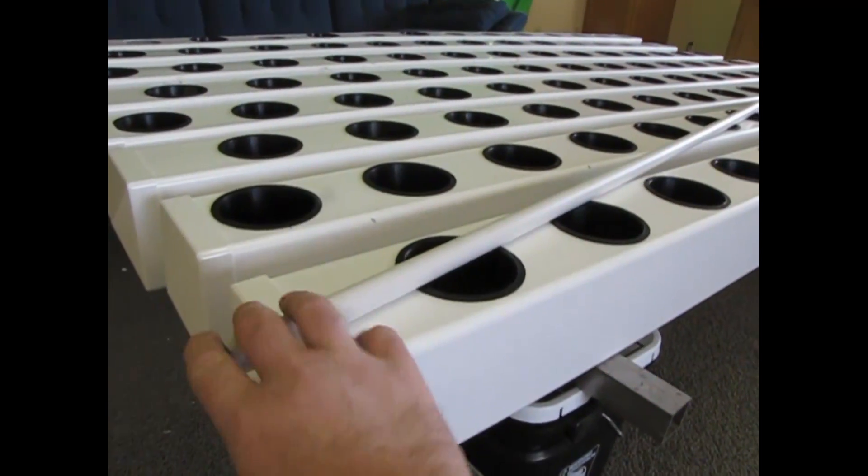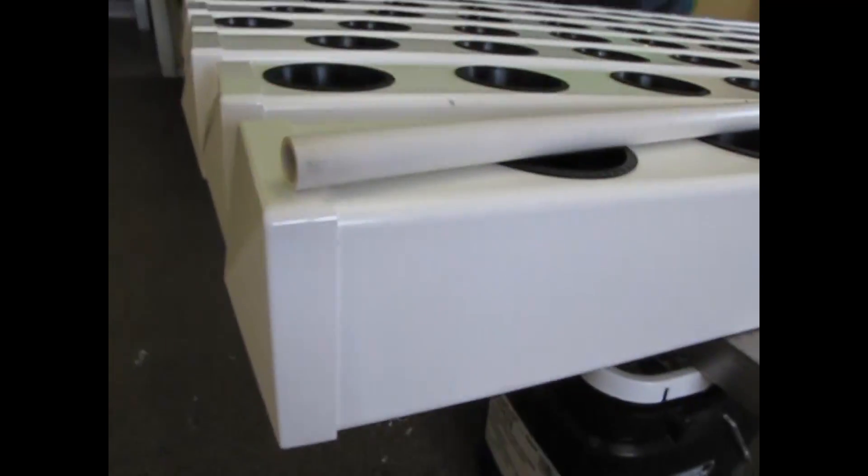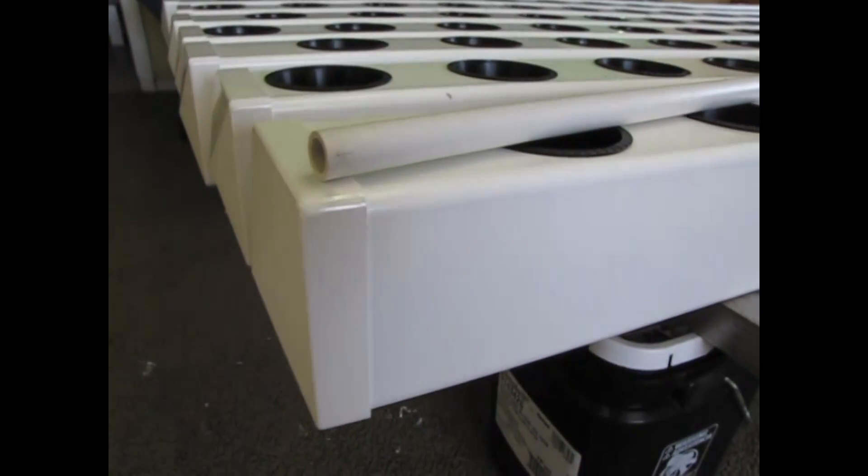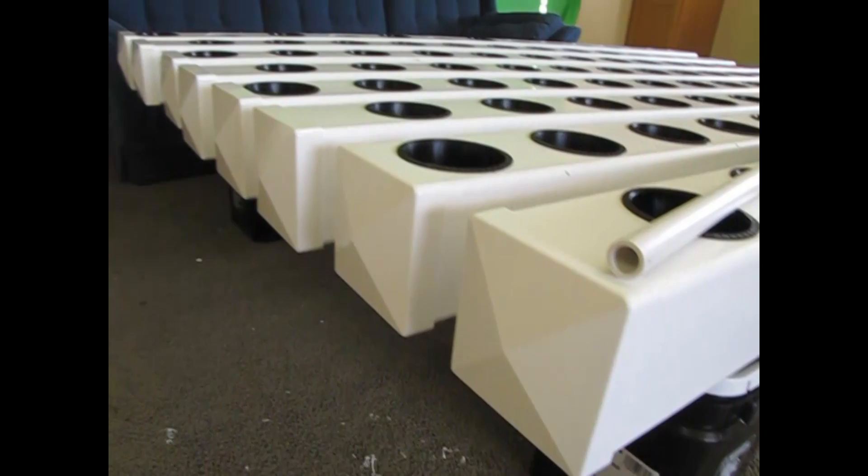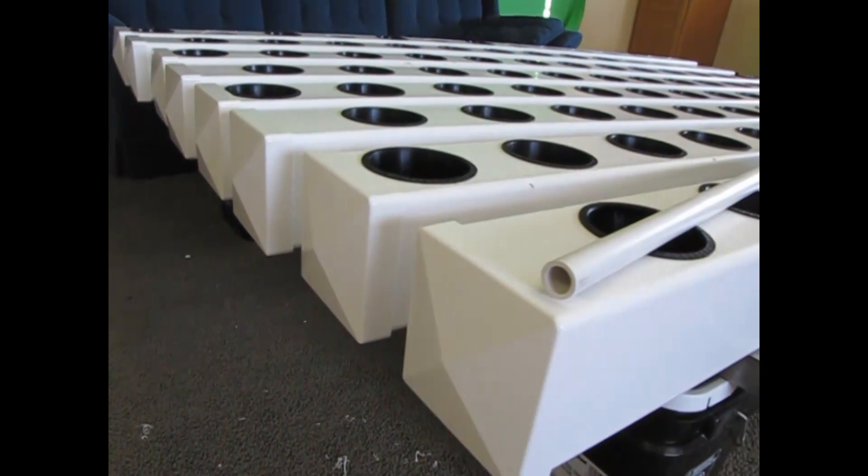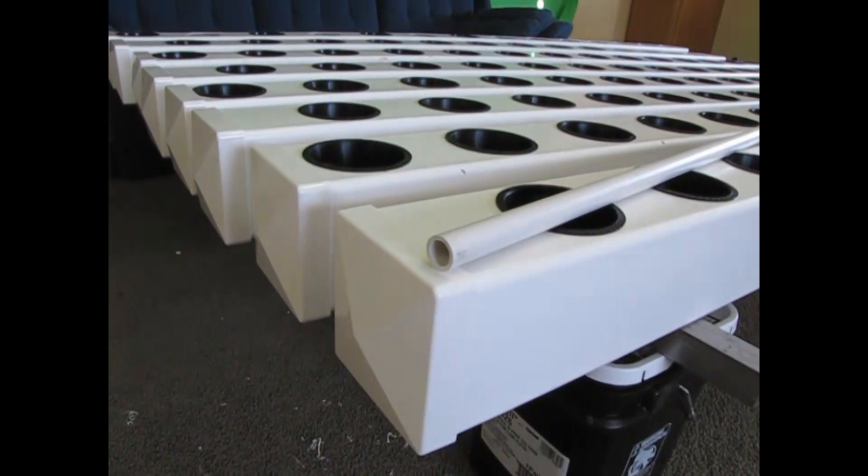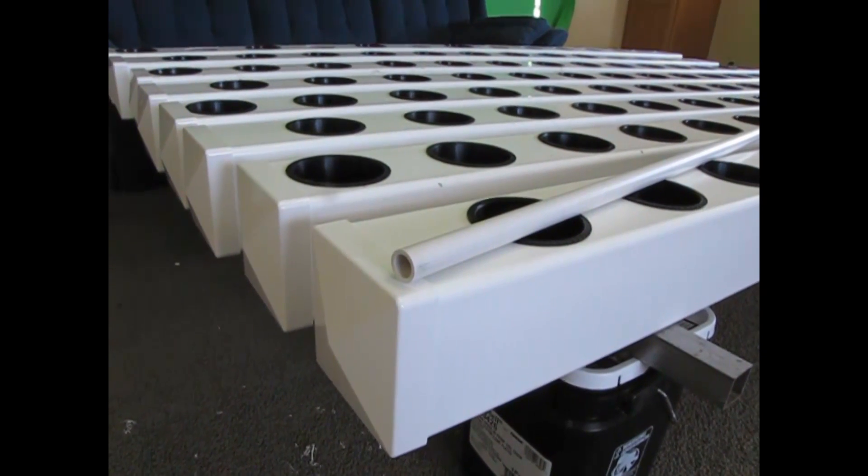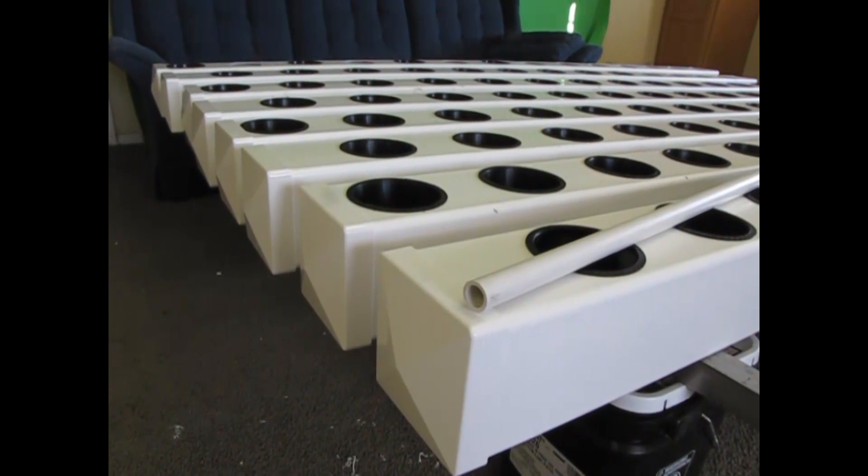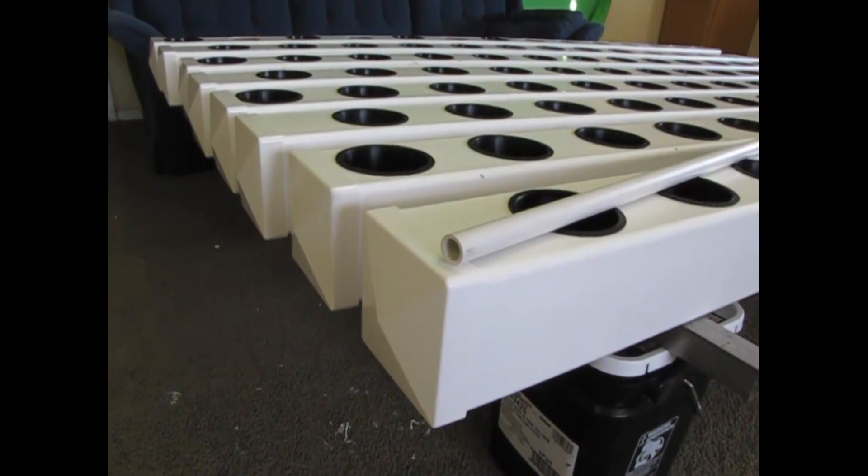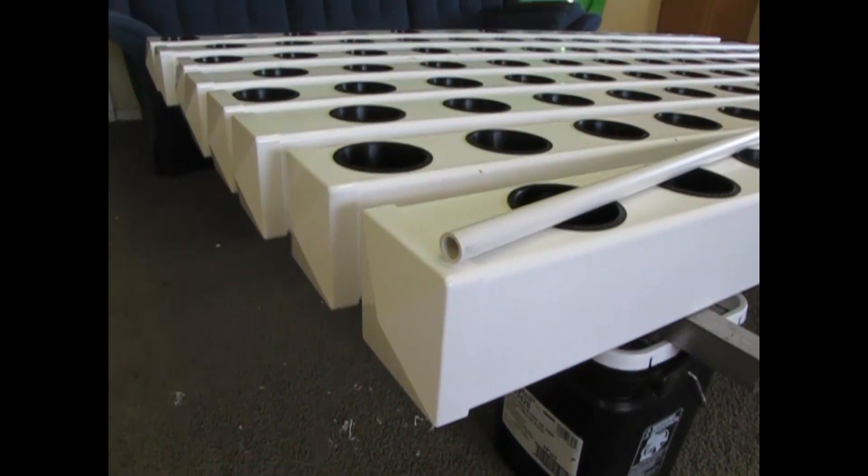These are the standard fence post caps. There's several styles and this is the one that is the cleanest with just a square end. Now this is the uphill end, so I wanted to still be able, if I have a problem like a big root ball or something that I need to have problems getting cleaned out, I wanted to be able to take these off. So I didn't use PVC glue, I use clear silicone and those will be waterproof with clear silicone.